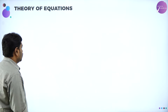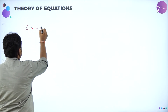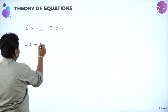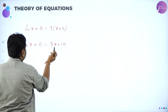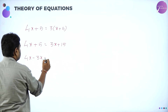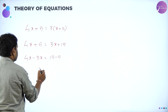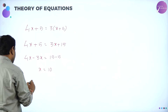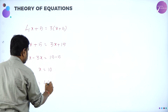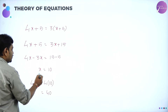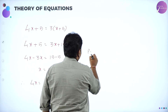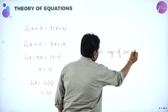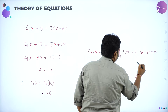Now we solve: 4x plus 5 equals 3x plus 15. Rearranging, 4x minus 3x equals 15 minus 5, so x equals 10. Therefore, son's age is x, which is 10 years, and father's age is 4x, which is 4 into 10, equal to 40 years. Present age of son is 10 years.